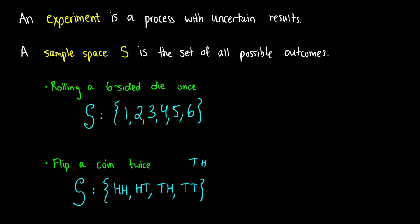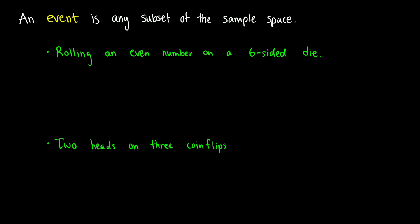Now we might be looking for a particular outcome, and we call that an event. We might use the letter E, or really any other letter. This is going to be a subset of the sample space — I'll explain what that means with this example.